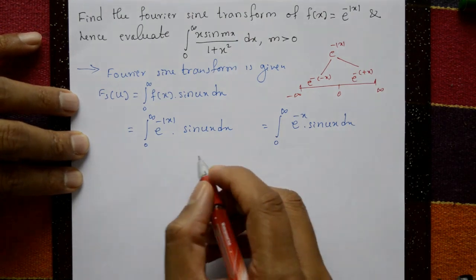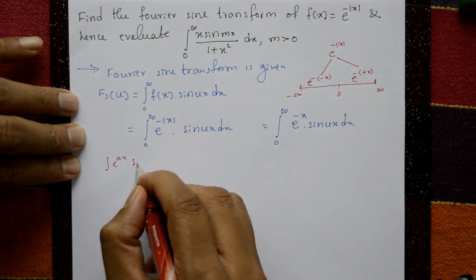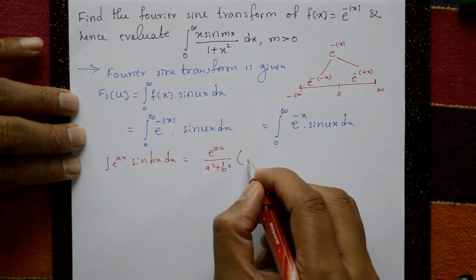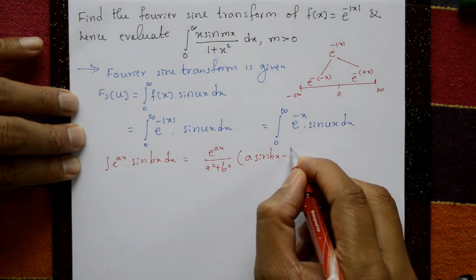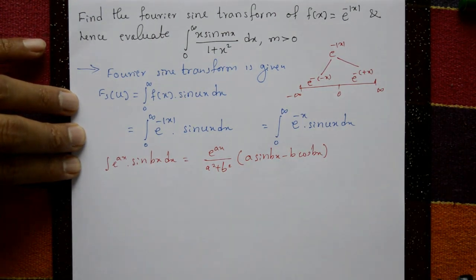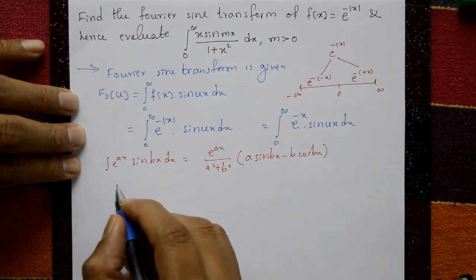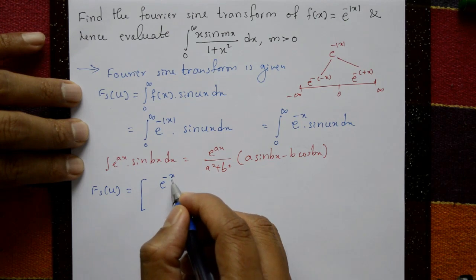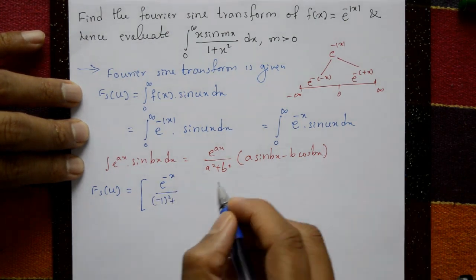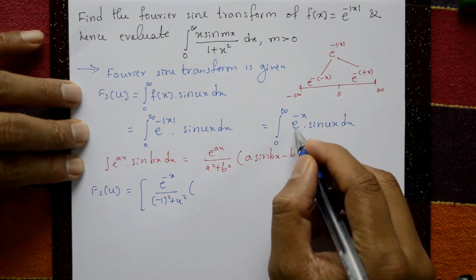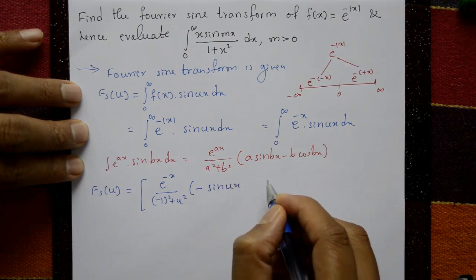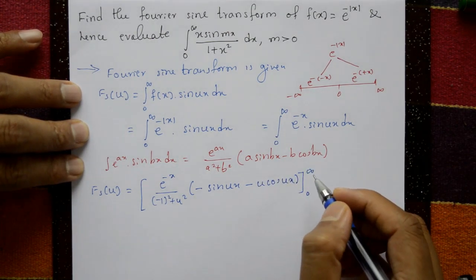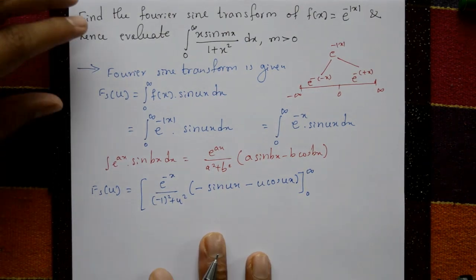Using the standard formula: ∫e^(ax)·sin(bx)dx = e^(ax)/(a²+b²) · [a·sin(bx) - b·cos(bx)]. Here a = -1 and b = u, so this gives e^(-x) / (1 + u²) · [(-1)·sin(ux) - u·cos(ux)], evaluated from 0 to infinity.